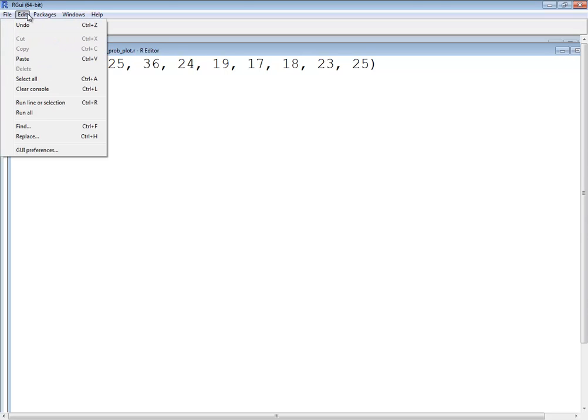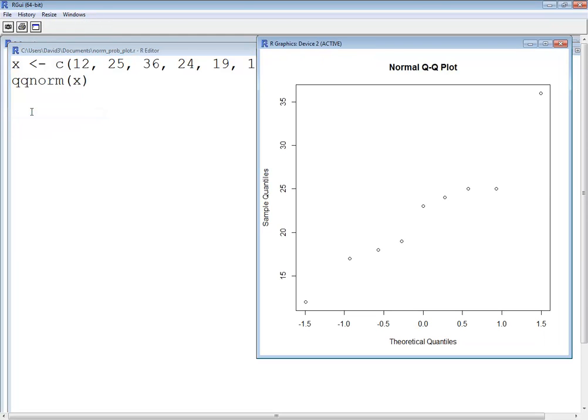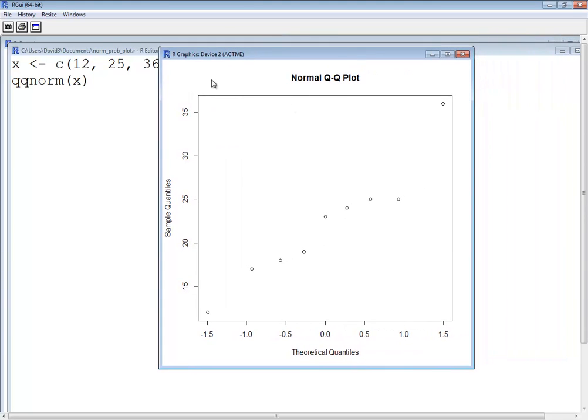Down here where you got the edit, you can choose run all. It will pop up with a graphics window. Now if you don't see this graphics window, you may have to do some minimizing and so forth to see it. But this gives us our normal probability plot.